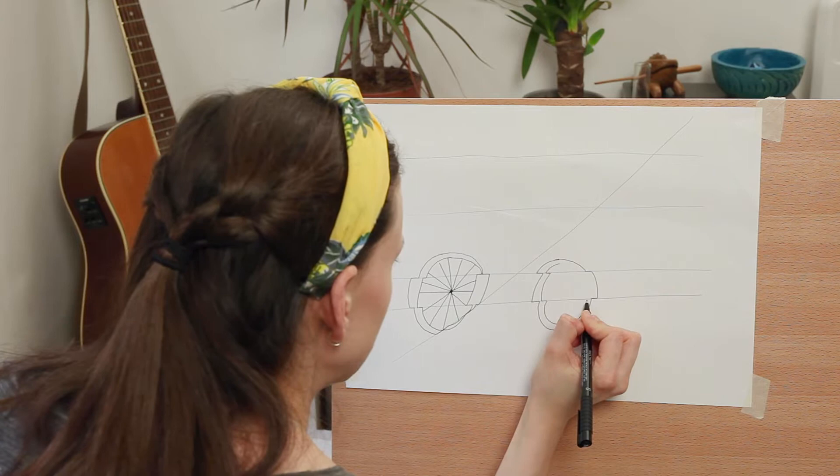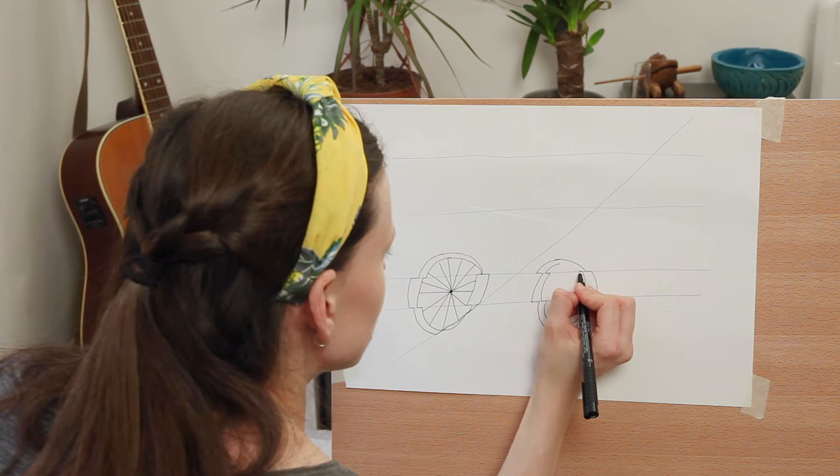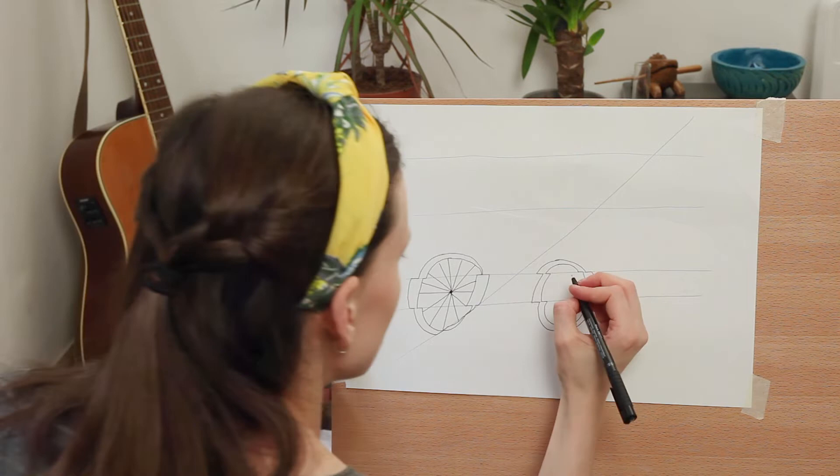And again I'm going to do the inner one. So you can't really make a mistake on this. Everything you do is going to look strange. And that's the beauty of it. I do go back and do my central point and my lines.